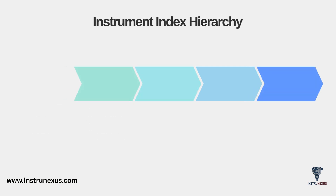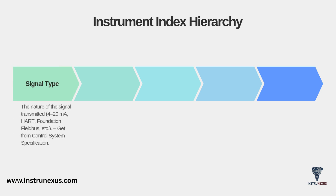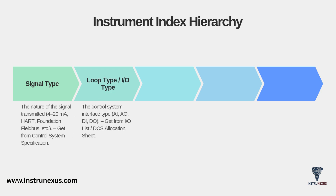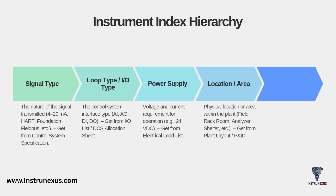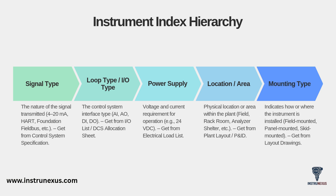The hierarchy continues by bridging the gap to the control and electrical systems. You must define the signal type: is it a 4–20 milliamp signal, is it using HART, or is it a digital signal like Foundation Fieldbus? This information comes from the control system specification. You'll also list the loop type or I/O type — like AI, AO, DI, or DO — which you get from the I/O list or DCS allocation sheet. Then comes the power supply requirement, such as 24 VDC, from the electrical load list. Finally, you specify the physical location or area, like field, rack room, or analyzer shelter, and the mounting type, such as field mounted or panel mounted.